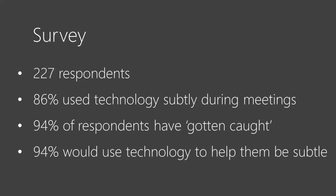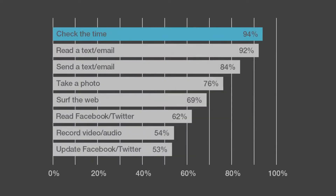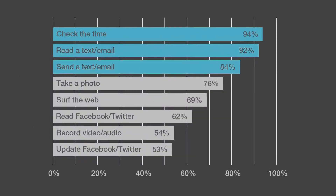Additionally, over 90% of the participants reported that they would use technology that would help them interact with their devices more subtly. We also found that the most common tasks people performed were checking the time, texting, and taking photos. Therefore, we sought to improve interactions for these tasks.